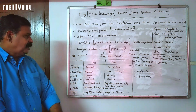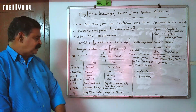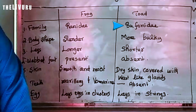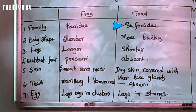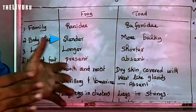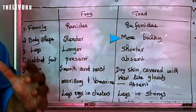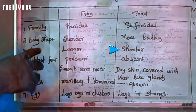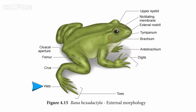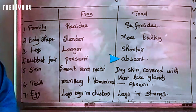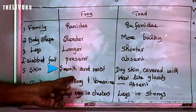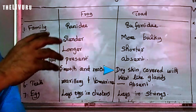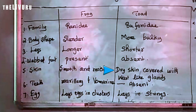The main difference between frogs and toads: frogs belong to family Ranidae, toads also belong to Ranidae. Frogs are small. If you look at the skin, frogs have smooth and moist skin.